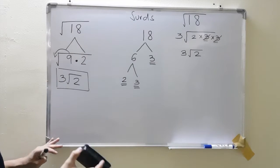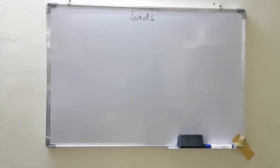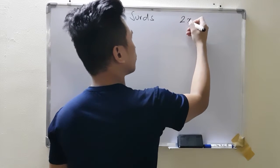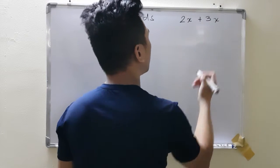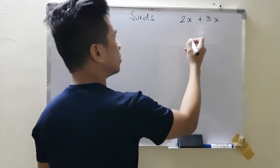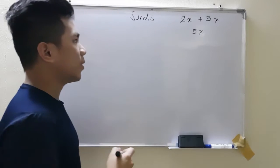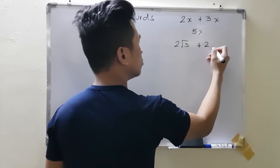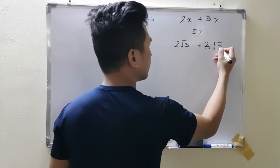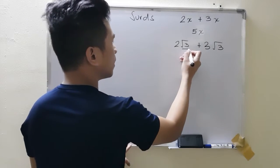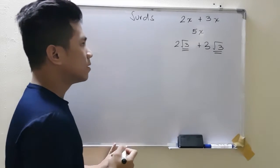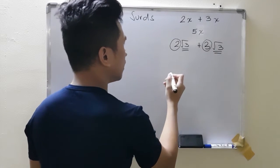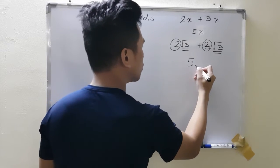Let's jump to addition and subtraction. Adding or subtracting surds is pretty much the same as working with variables. For example, 2x plus 3x equals 5x. It's the same with surds: for example, 2 square root of 3 plus 3 square root of 3. The square root of 3 is just like x. When adding, you only add the numbers in front — 2 and 3 — which gives us 5, and then root 3 is just copied.